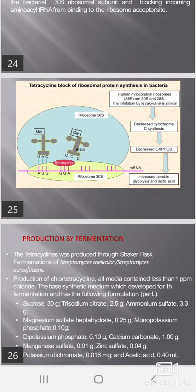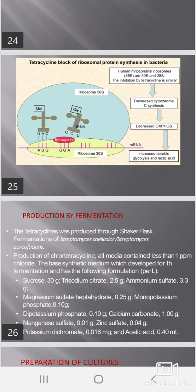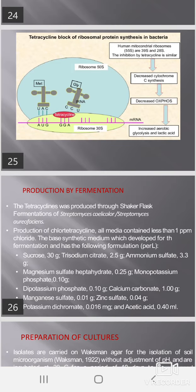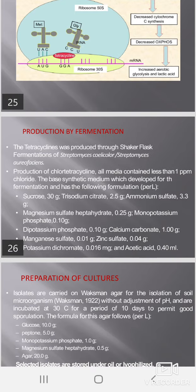Production by fermentation: Tetracycline is produced through shaker flask fermentation of Streptomyces coelicolor and Streptomyces aureofaciens for production of chlortetracycline. All media contain less than one ppm chloride. The base synthetic medium developed for fermentation has the following formulation: sucrose 30g, trisodium citrate 2.5g, ammonium sulfate 3.3g, magnesium sulfate heptahydrate 0.25g, monopotassium phosphate 0.10g, dipotassium phosphate 0.10g, calcium carbonate 1.0g, zinc sulfate 0.04g, potassium dichromate 0.01mg, and acetic acid 0.40ml.